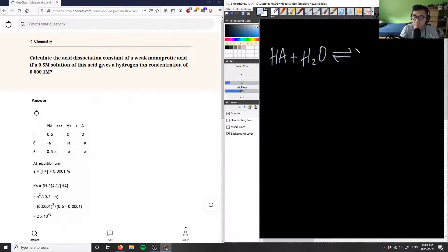It's going to be in equilibrium with, and obviously if you have a weak acid it's going to dissociate into its hydrogen ion. So I'm going to lose the hydrogen here and get my conjugate base here.